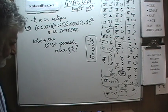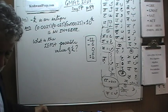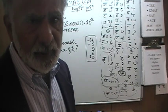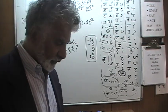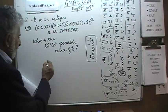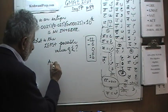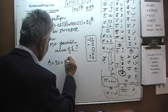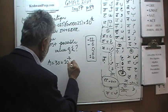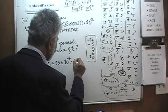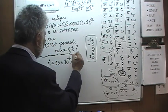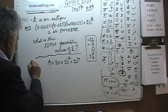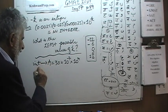Let's do it together. Before we do this together, let's do a baby version — a simpler version. Here's the problem: if we are told that A equals 30 times 10 raised to negative 7 times 10 raised to M, what is the least possible value of M that makes A an integer? A has to be an integer.